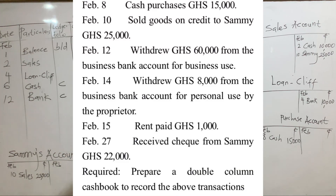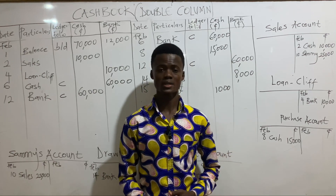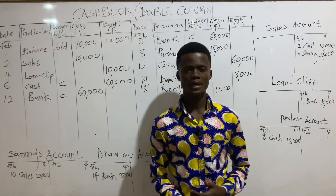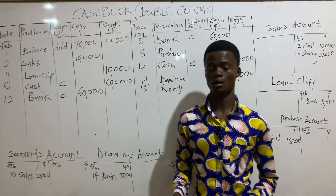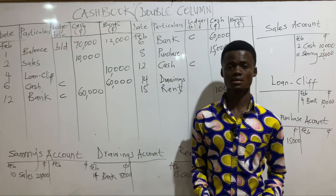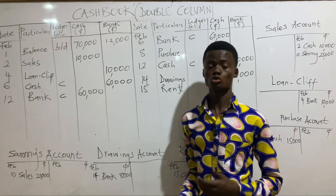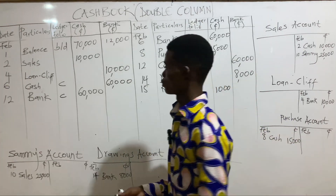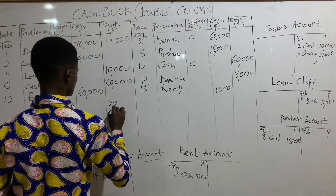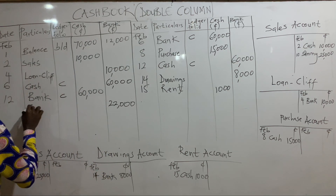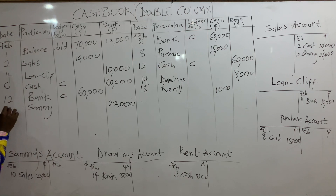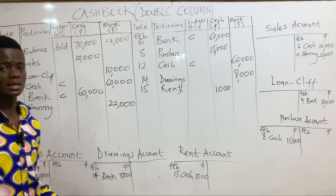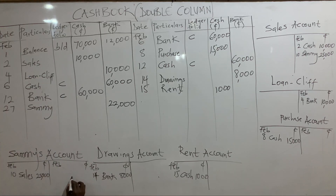On February 27th, we received a cheque from Samae for 22,000 cedis in payment of his debt. We debit the bank column of the cashbook with 22,000 cedis in the name of Samae. The corresponding entry is crediting Samae's account with 22,000 cedis in the name of bank, to reduce his amount of indebtedness.